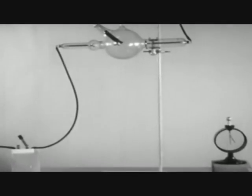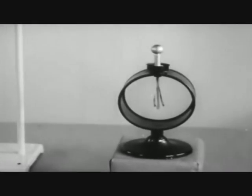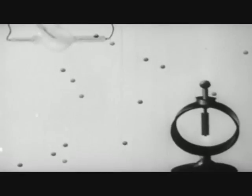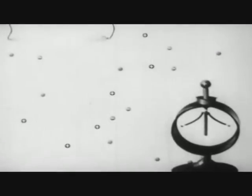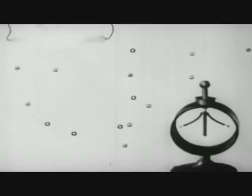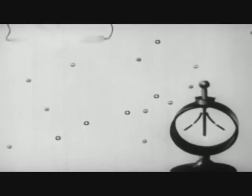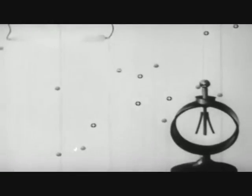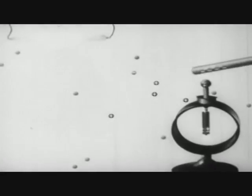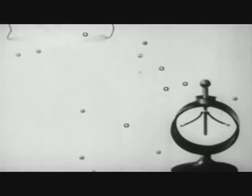Similarly, x-rays produced even at some distance caused the charged leaves to collapse. We can explain these phenomena if we assume that the flame and the x-rays caused air molecules to become charged, some positively and some negatively. For the positively charged electroscope, negatively charged molecules are attracted to the knob and cause some of its charge to be neutralized. Furthermore, when the electroscope is negatively charged, positively charged molecules present cause the leaves to collapse.